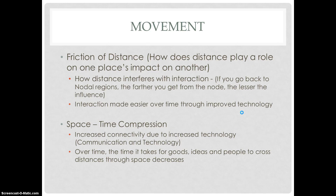Friction of distance decreases with improved technology, which leads to space-time compression. Space-time compression is increased connectivity due to increased technology, including communication and transportation technology. Over time, the time it takes for goods, ideas, and people to cross distances decreases. For example, in the 1600s and 1700s, crossing the ocean required ships, but now getting from Atlanta to Germany is only a five-hour flight thanks to airplanes.